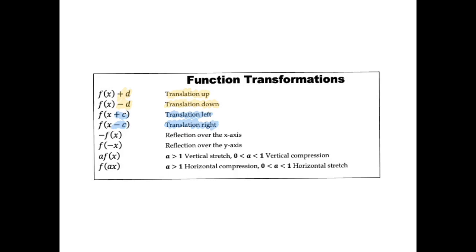The next transformation has to do with negative signs. First, a negative multiplying the whole function, and then a negative multiplying only the x inside the parentheses. If the negative is multiplying the whole function, you will get a reflection over the x-axis. Versus if the negative is only multiplying x, or inside of the parentheses, you will get a reflection over the y-axis.